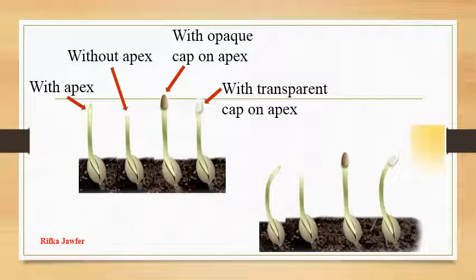You will observe that the plant with apex uncovered and the apex covered with transparent cap will turn towards sunlight while other two will have no change. So now it is further confirmed that there is an effect of plant apex on the growth of the plant.